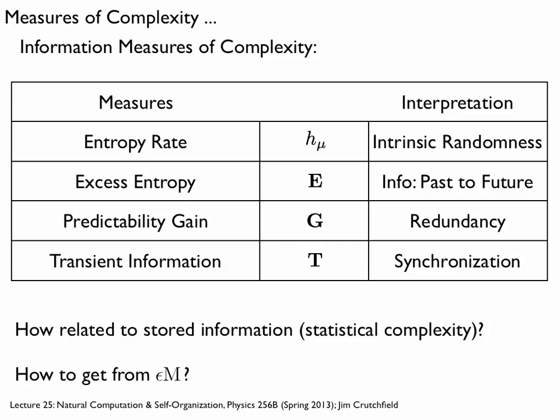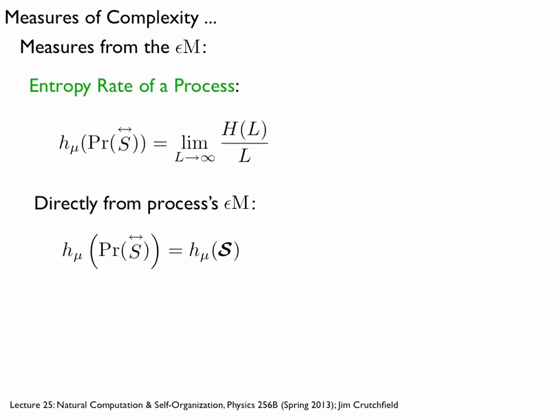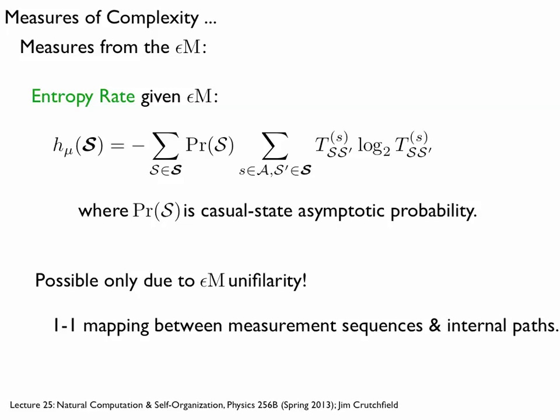Let's start at the top — what's more or less the simplest unifying theme: how random a process is. We have the original definition of the entropy rate given the description of the process in terms of sequences and probabilities. We can define that in terms of the limit of the block entropy divided by L — it's like the information per symbol. We have ways of thinking about that as looking at enough history and looking at the uncertainty in the next symbol based on infinite pasts. You could also get this directly from the epsilon machine. So the entropy of the process is going to be entropy using the causal states.